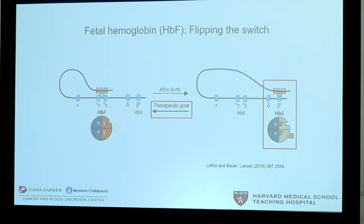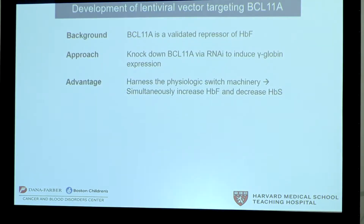Our therapeutic goal is to use gene therapy to provide a set of genetic instructions to the red blood cell precursors to flip the switch back to producing high levels of fetal hemoglobin and low levels of sickle hemoglobin. Our approach is to knock down BCL11A via RNA interference to induce gamma globin expression. A potential advantage of this approach over gene addition gene therapy is that we can harness the physiologic switch machinery in the cell to simultaneously increase fetal hemoglobin and decrease sickle hemoglobin.